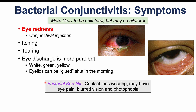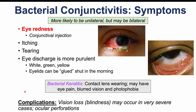A more severe form is bacterial keratitis, where the cornea becomes involved. This is more common in people who wear contact lenses. In bacterial keratitis, patients may have eye pain, blurred vision, and photophobia or light sensitivity. These are characteristic findings. Further complications of bacterial conjunctivitis can include vision loss, blindness in very severe cases, and ocular perforation — some of these more severe complications occurring in chlamydial and gonorrheal conjunctivitis cases.